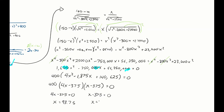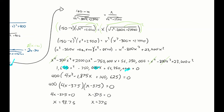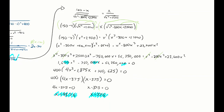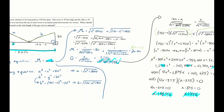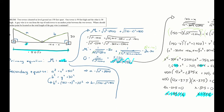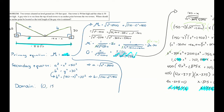We have two answers — which gives the minimum? We need to check the feasible domain. Since x represents a length along the 150-foot span, x must be between 0 and 150 feet. That eliminates x = 375, leaving us to check the endpoints x = 0 and x = 150, plus the critical number x = 93.75.